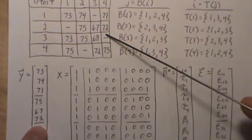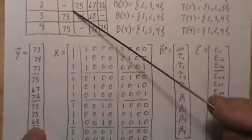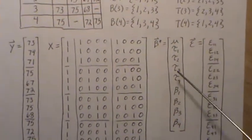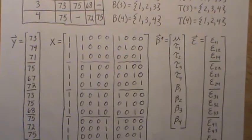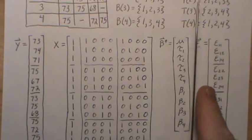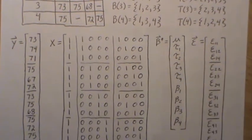Then treatment three and treatment four. The beta vector is mu, tau one through tau four, beta one through beta four. When we multiply this over, we have a column space associated with mu, the taus, and the betas.